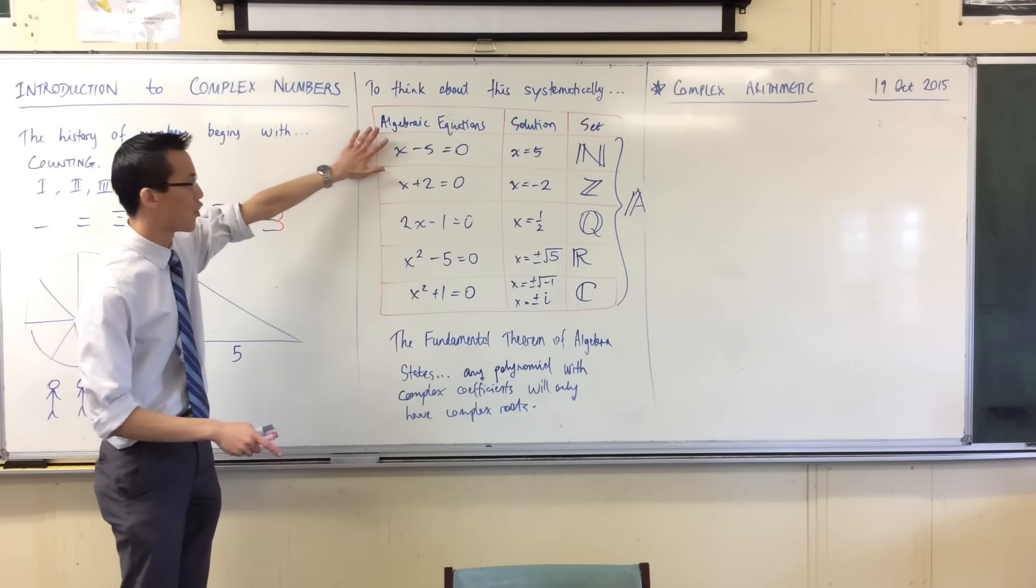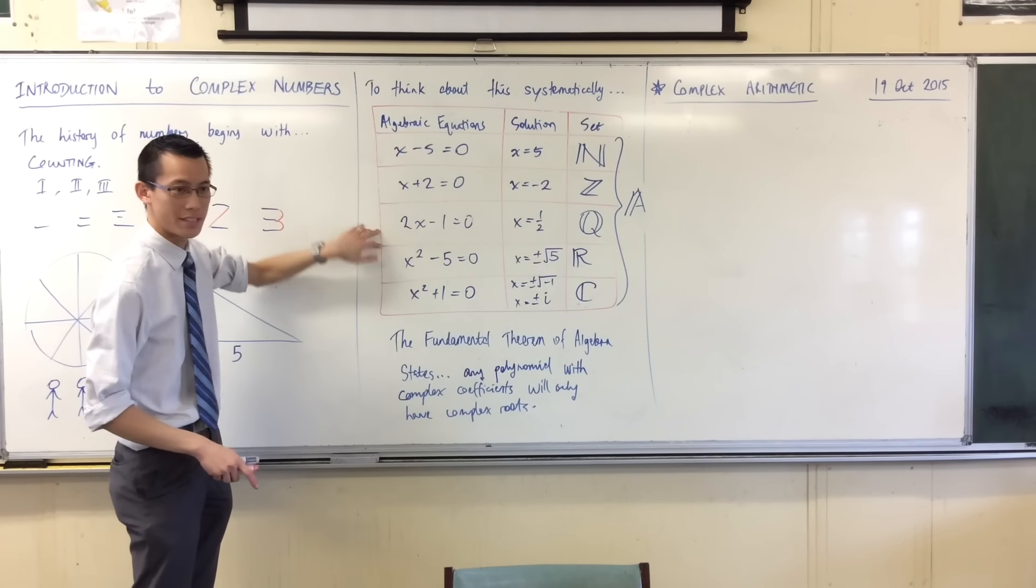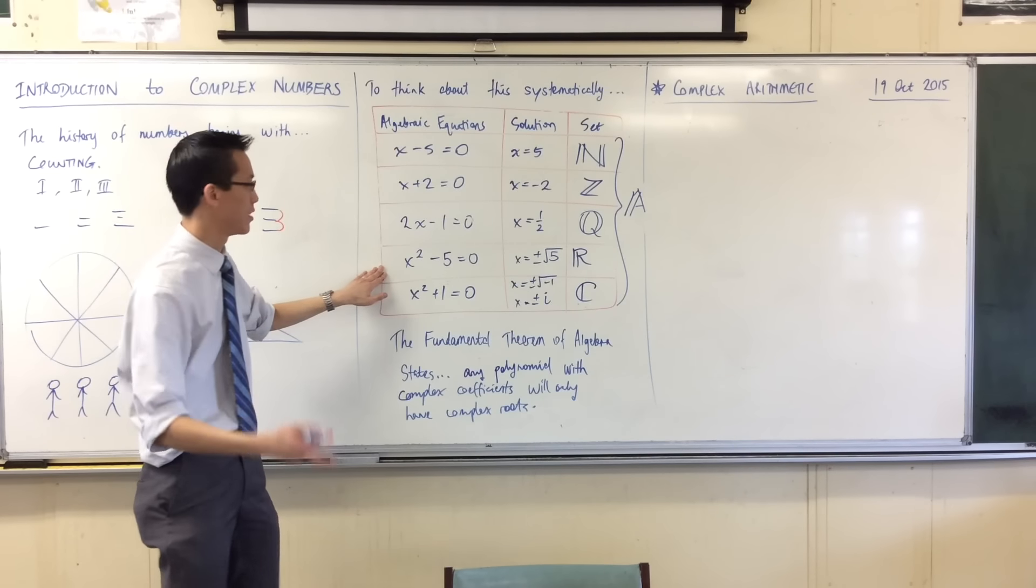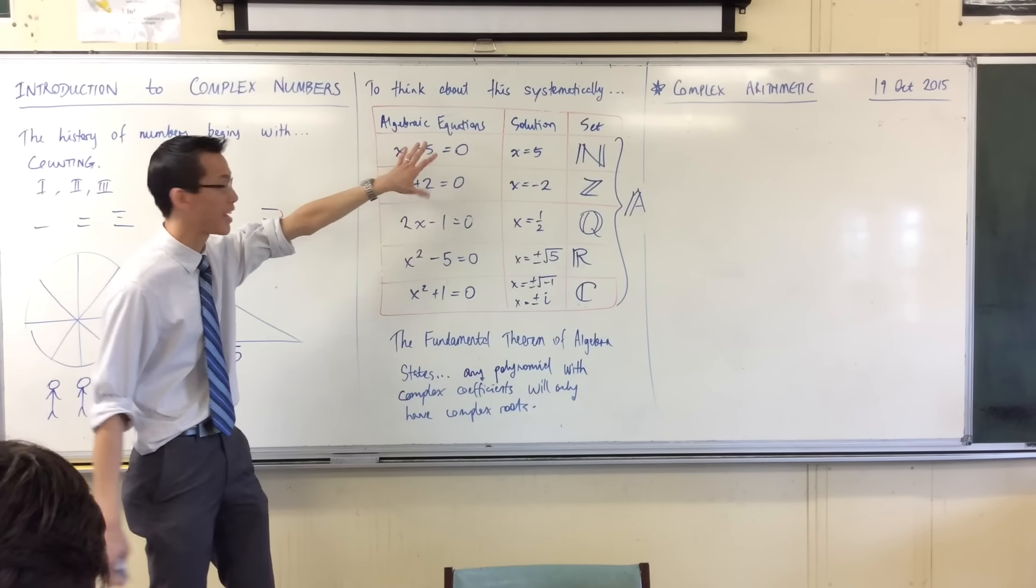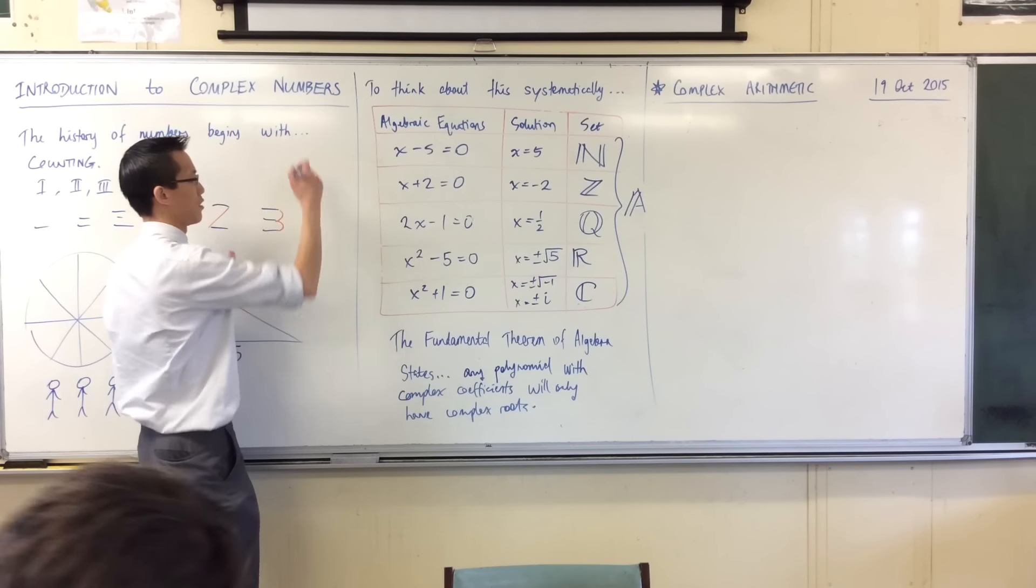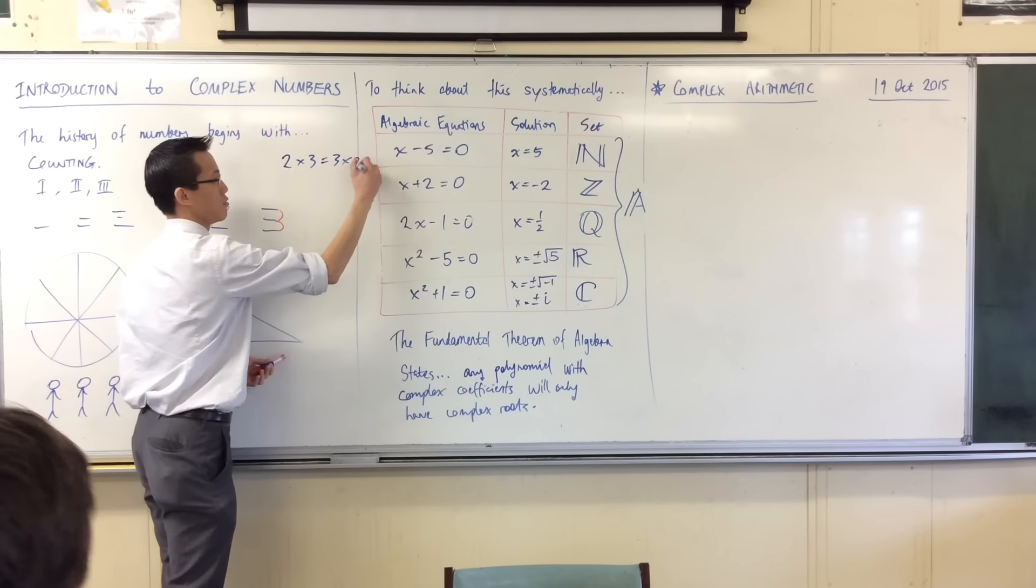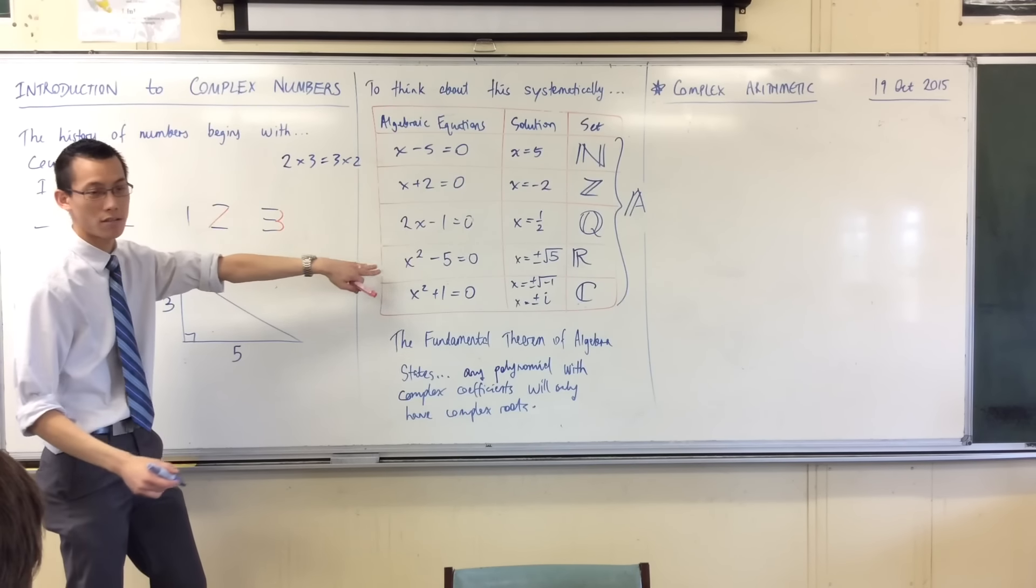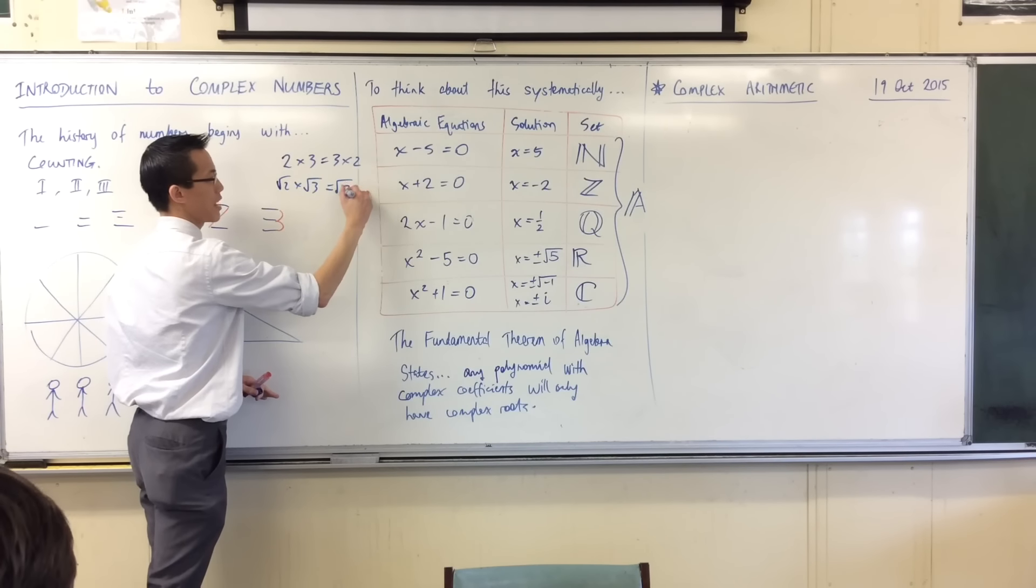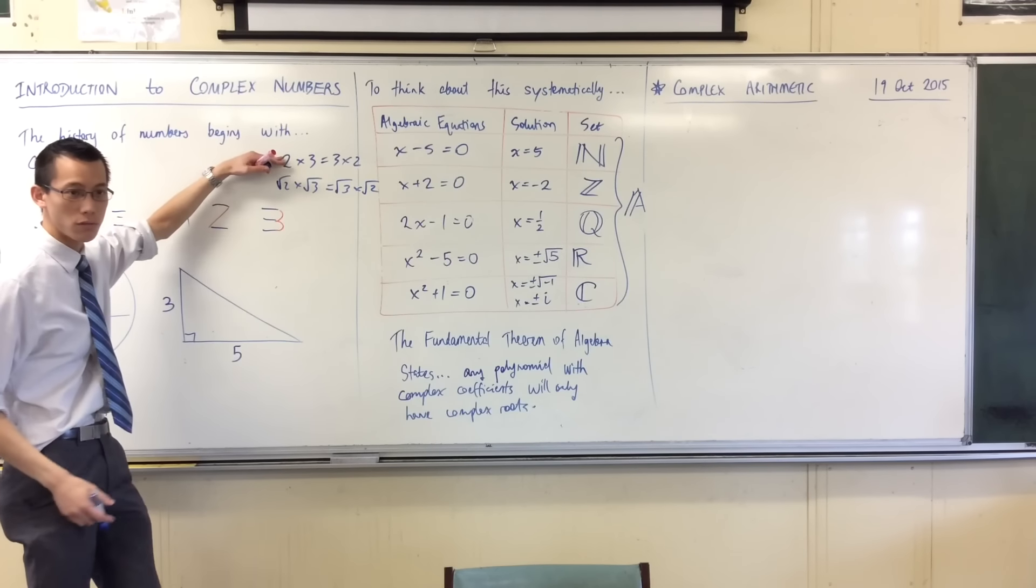In the same way that, you know, all the rules you know for normal counting numbers, rational numbers, et cetera, they apply to irrational numbers. Sort of. Right? So, for instance, if you multiply together two counting numbers, like say two times three, that's the same as three times two. You agree with that? And if you take, you know, thirds, you can say the square root of two times the square root of three, that's still the same as the square root of three times the square root of two. So, these rules apply.